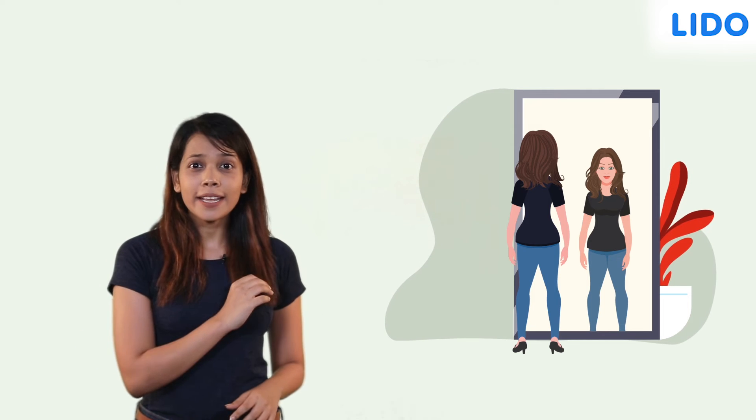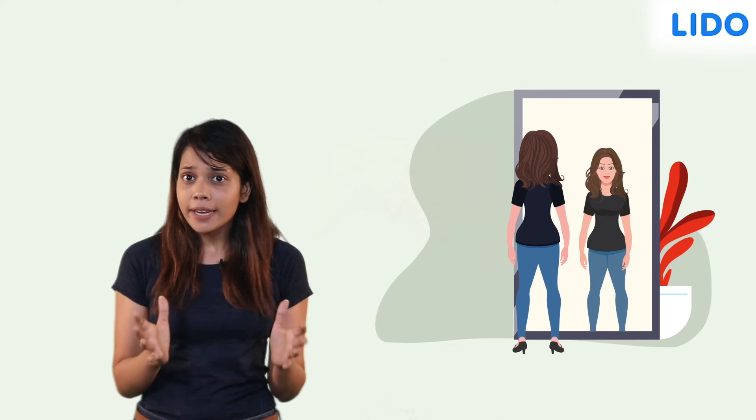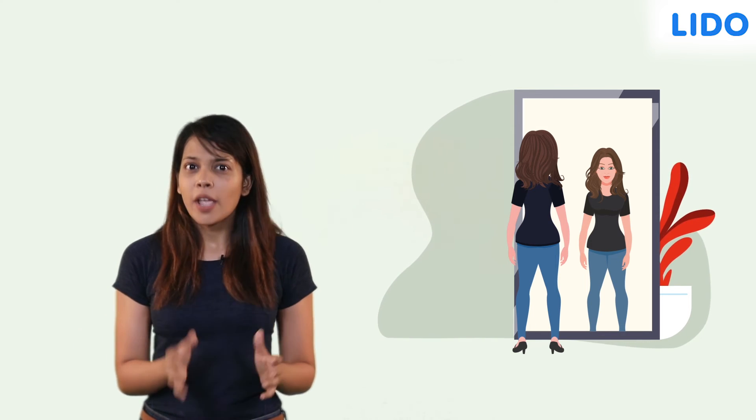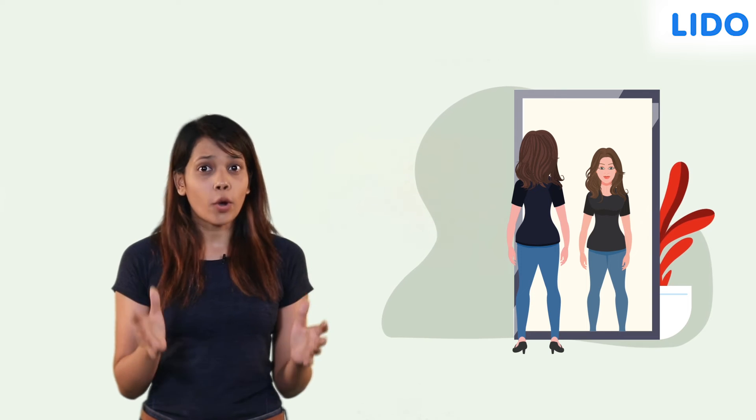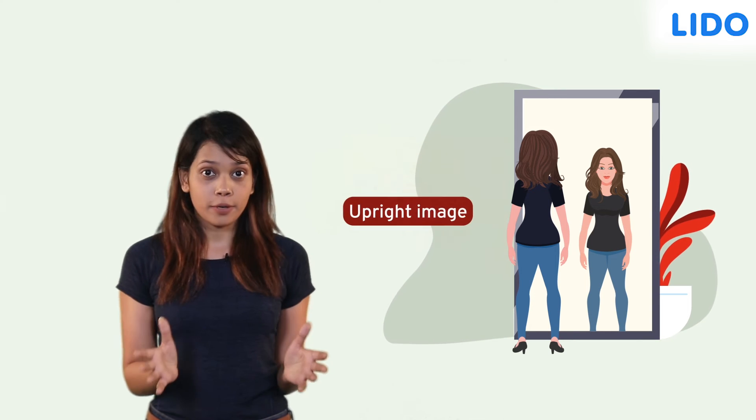And just like looking at the real object, the image is the right way up. So it is called erect or an upright image.